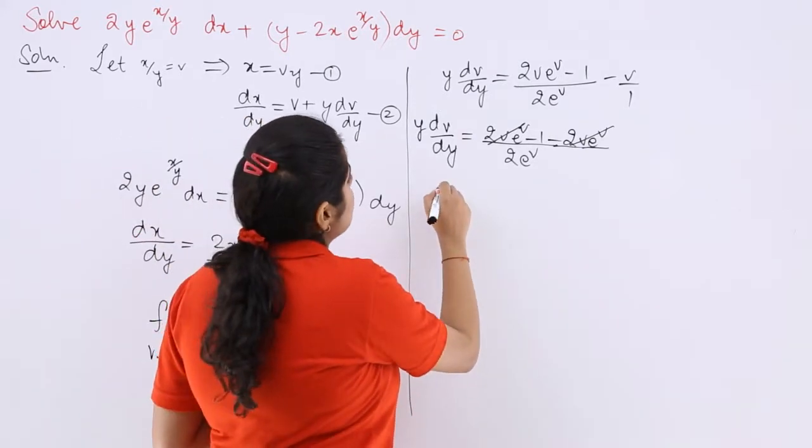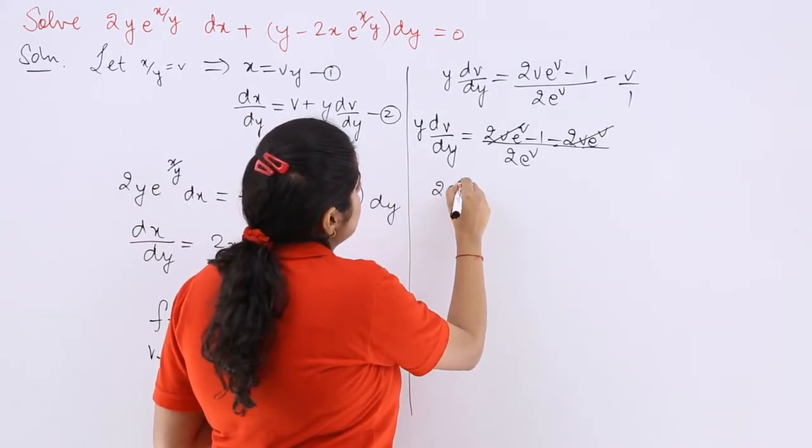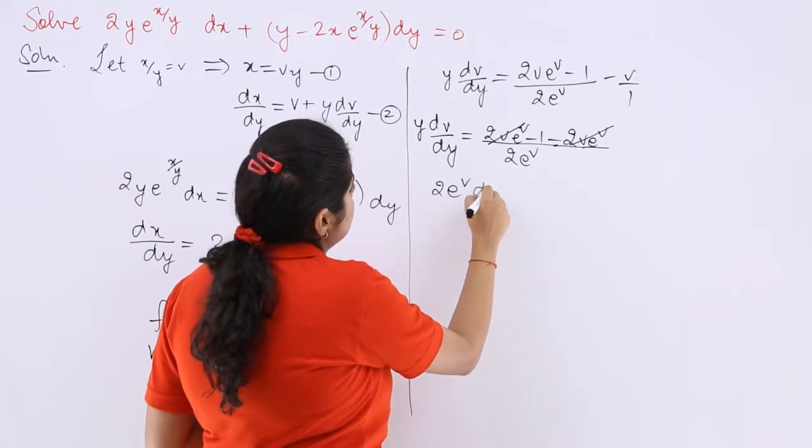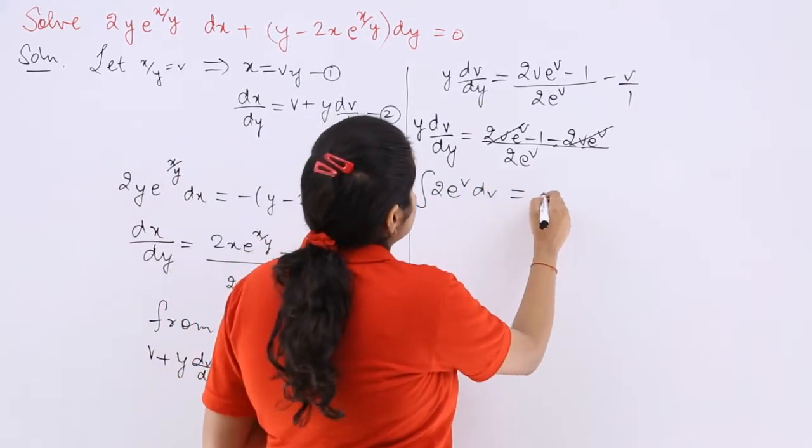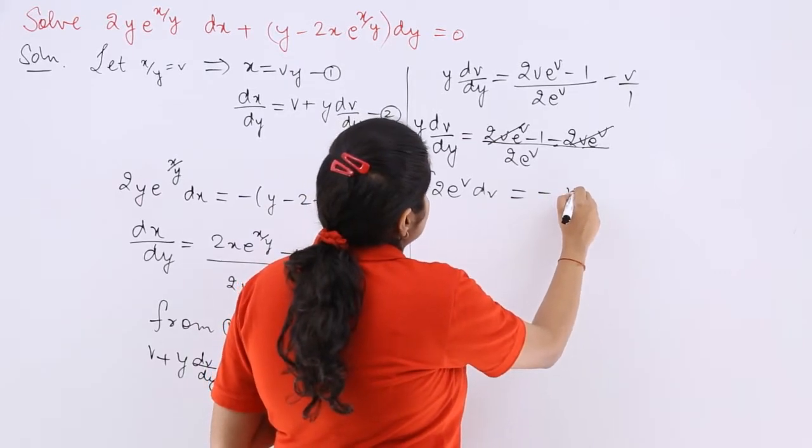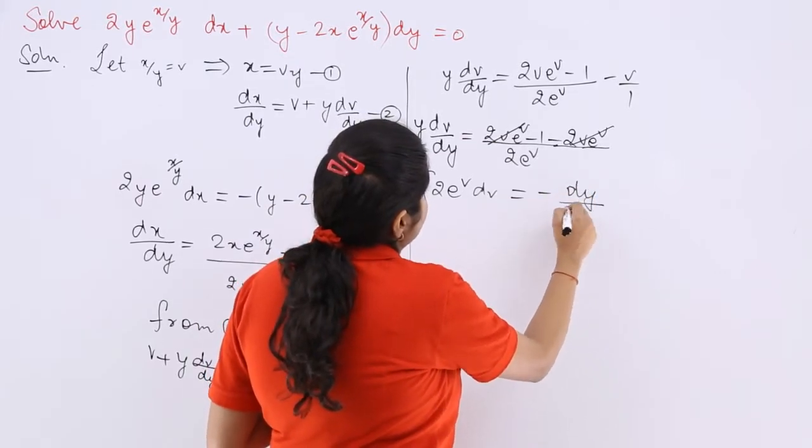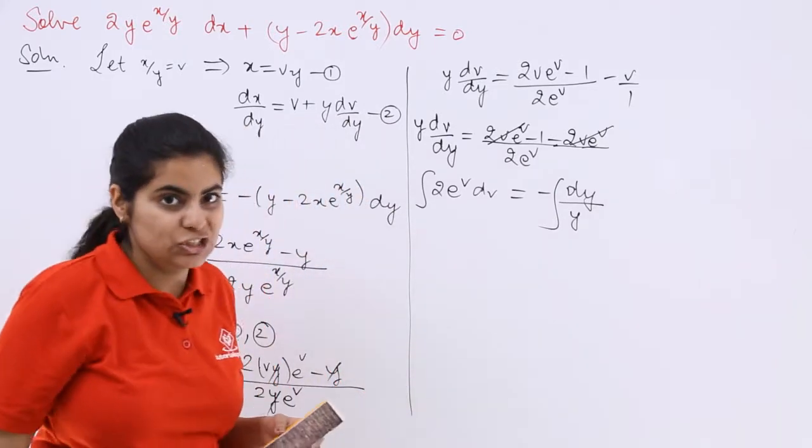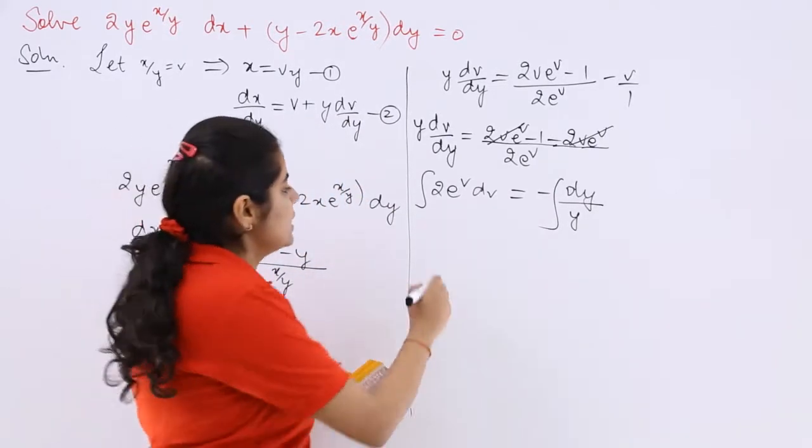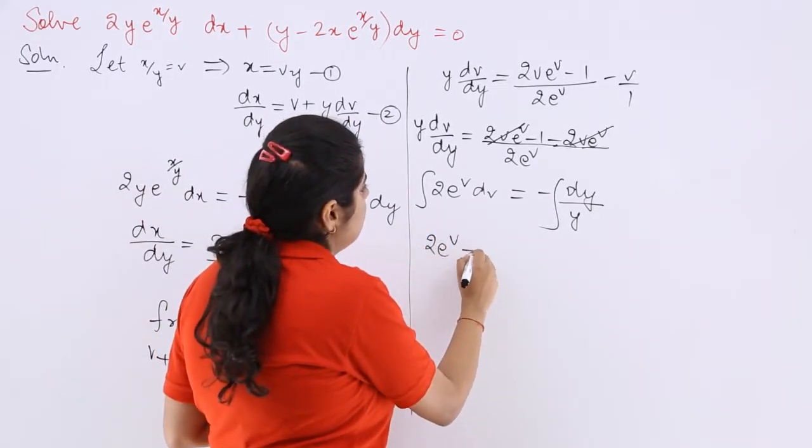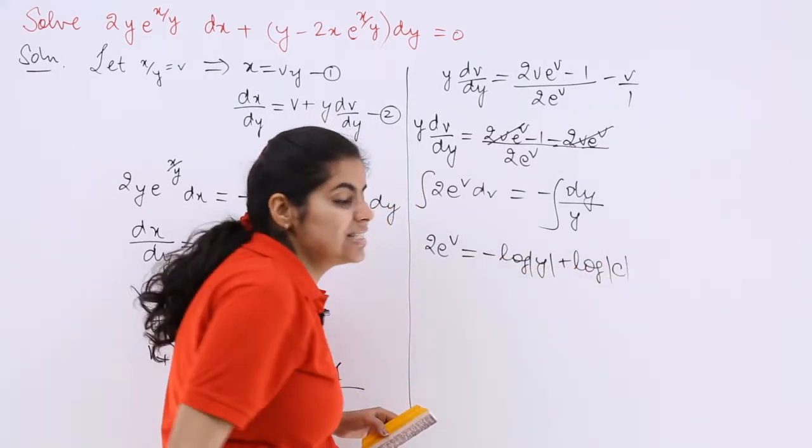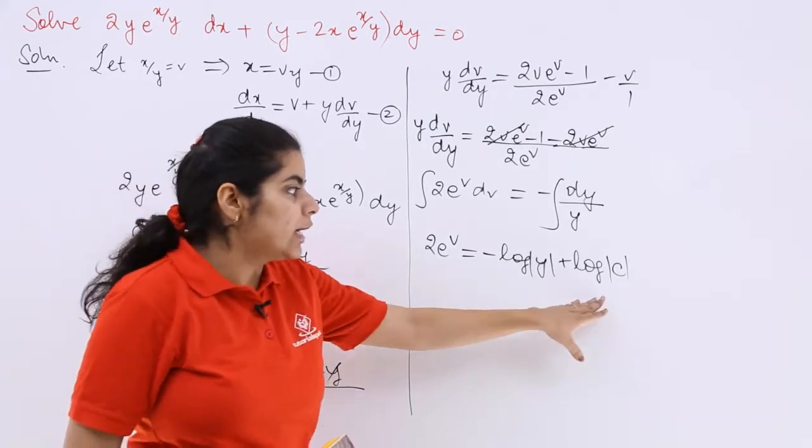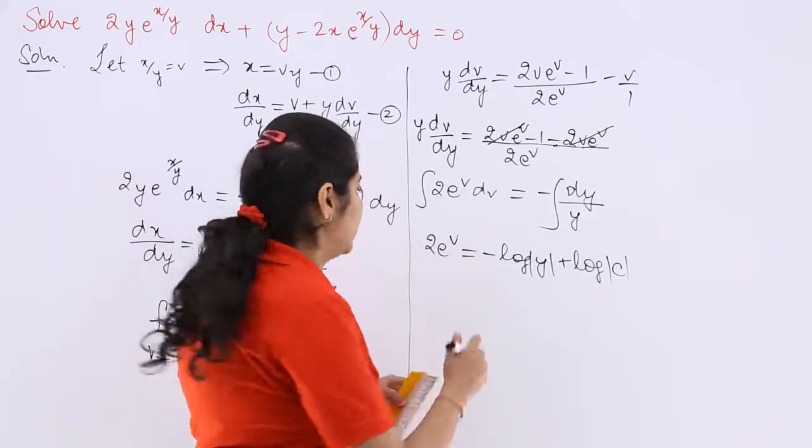So what is 2·e^v·dv here in the form of integration and here it is minus dy upon y in the form of integration. Now integrating both sides it is 2·e^v which is equal to minus log y plus log c and see log m minus log n is log m upon n.